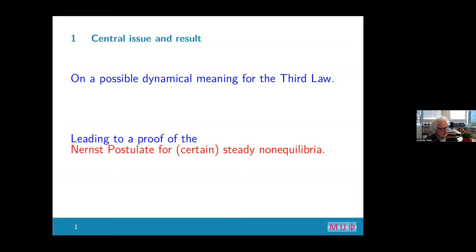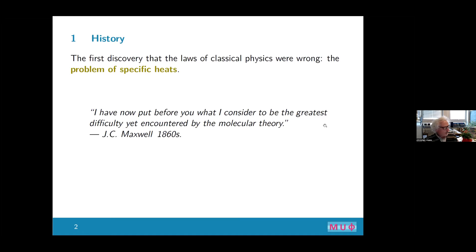This applies for certain steady non-equilibrium states. You may know that in contrast to the first and second law of thermodynamics, the third law is not really part of — does not follow directly from — the formalism of statistical mechanics. One needs conditions; it's not always valid. If you go to non-equilibrium, which I will explain how you do, it also needs conditions, and we do not speak about a general law. I prefer to speak about an extension of the Nernst postulate.